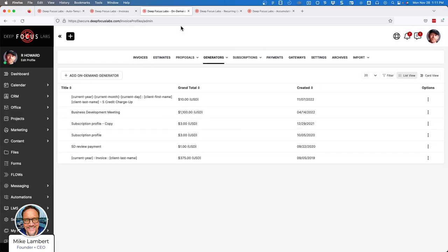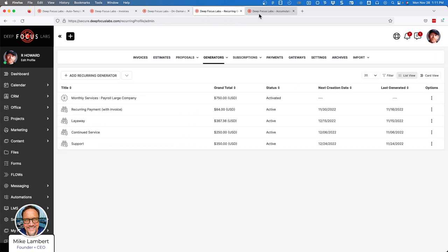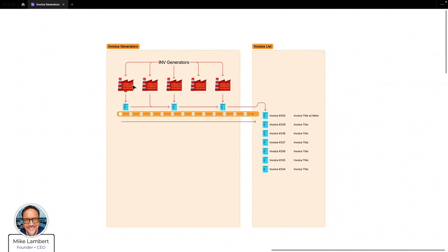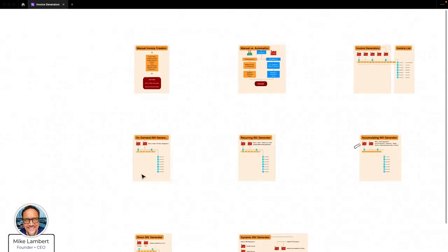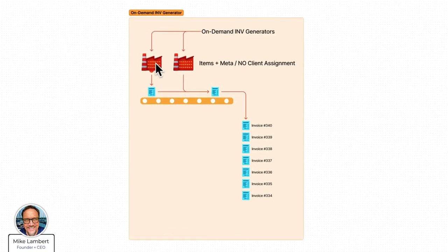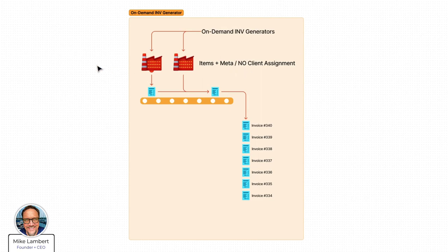I have an on-demand list here, a recurring list, and an accumulating list. Let's look at on-demand. An on-demand invoice generator looks like this — it contains items plus metadata. We set the items, we have the metadata set for the invoice, but importantly, there's no client assignment in an on-demand generator.